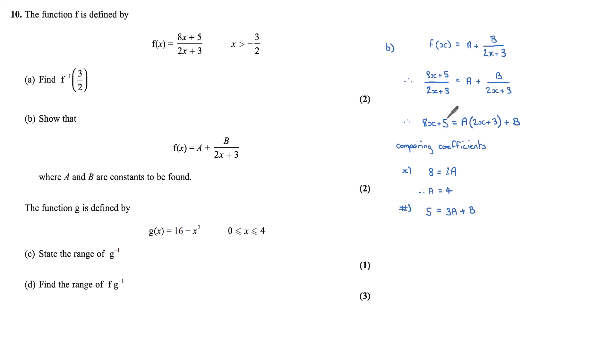Looking now at the numerical term, on the left hand side I have 5, and on the right hand side I will have 3a + b. I know a is 4, so this is 12 + b, therefore b is equal to -7. And I can write my function as 4 - 7/(2x + 3), so a is 4 and b is -7.